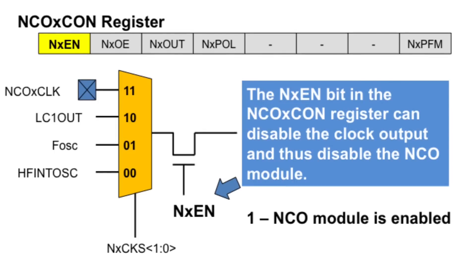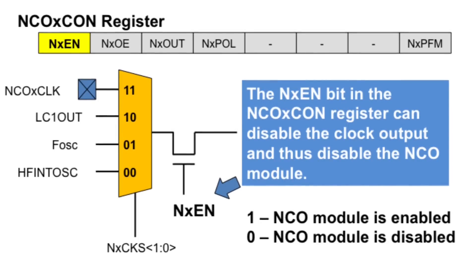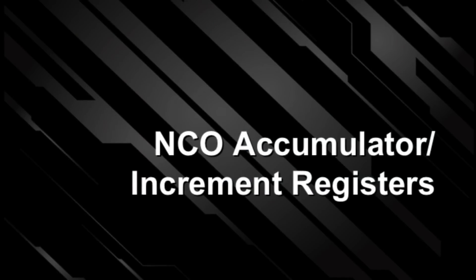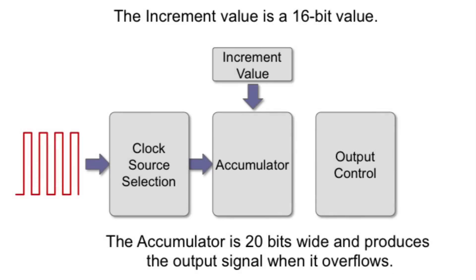The NCO enable bit is located in the NCO control register. A 1 setting enables the NCO module and a 0 setting disables it. The increment value is a 16-bit value, which allows for a minimum increment value of 1 and a maximum increment value of 65,535.